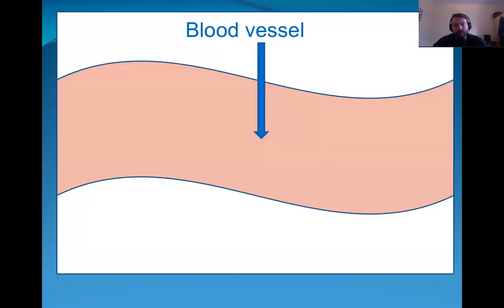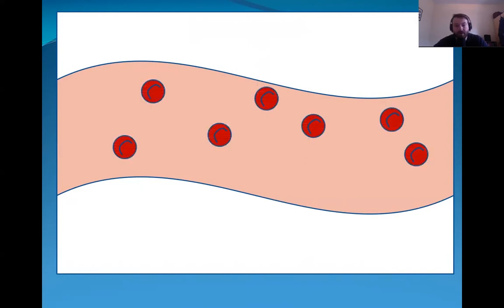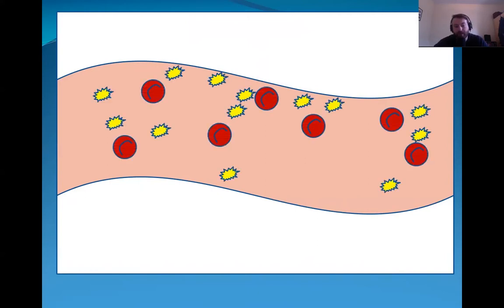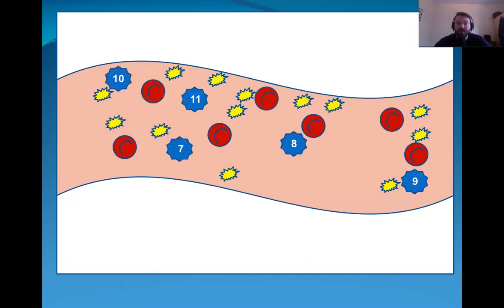To understand hemophilia, it's important to understand some things about the blood circulation. This illustration represents a blood vessel. Inside the blood vessel, there are a lot of important cells for the understanding of hemophilia. There are erythrocytes, platelets, and there are also proteins related with coagulation.